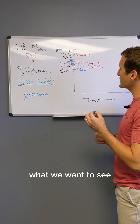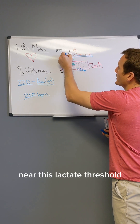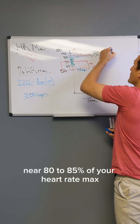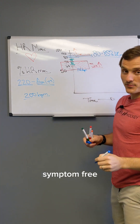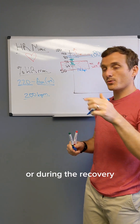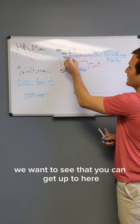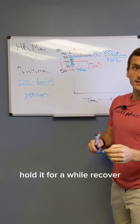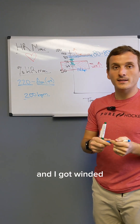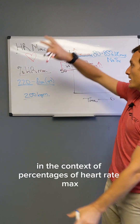What we want to see is that you can reach near the lactate threshold — near 80 to 85% of your heart rate max — symptom-free, both during exercise and during recovery. We want to see you get up there, hold it for a while, recover, and feel that it was hard and you got winded, but there was no headache, no nausea, no brain fog, no dizziness.